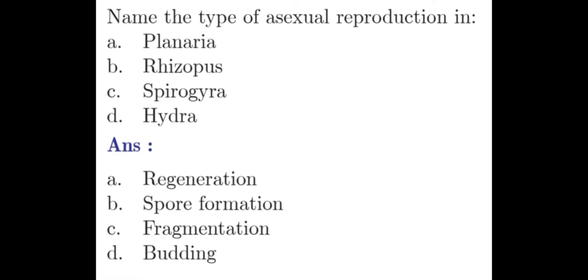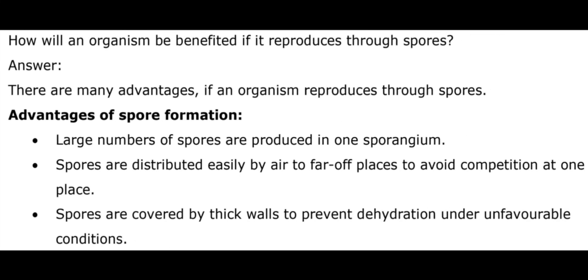Question 4: Name the type of asexual reproduction in Planaria, Rhizopus, Spirogyra, and Hydra. Answer: The type of asexual reproduction found in Planaria is Regeneration. In Rhizopus, it is Spore formation. In Spirogyra, it is Fragmentation. In Hydra, it is Budding.